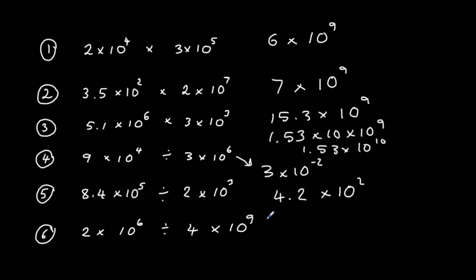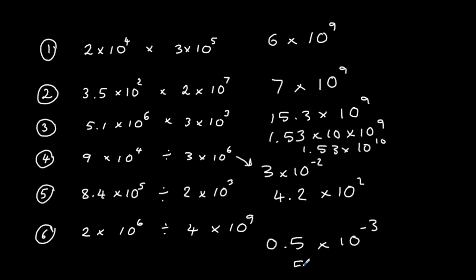Number 6: we've got 2 divided by 4 which is 0.5, and 10 to the power of 6 divided by 10 to the power of 9 is 10 to the power of minus 3. We can't have 0.5, so we take a 10 off of here to put onto the coefficient. If we take 1 off of the power, that becomes minus 4, giving 5 times 10 to the power of minus 4.